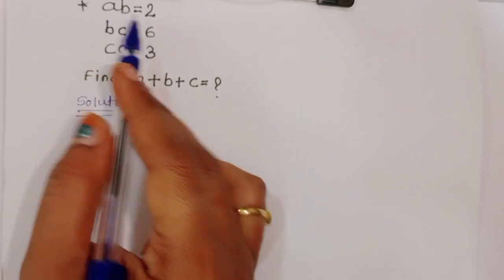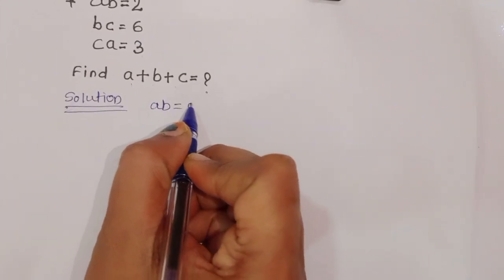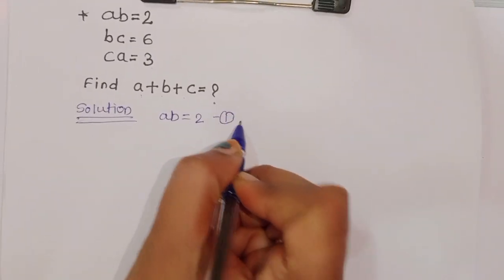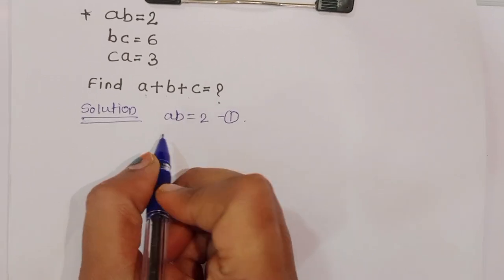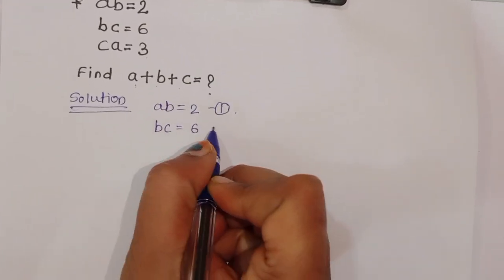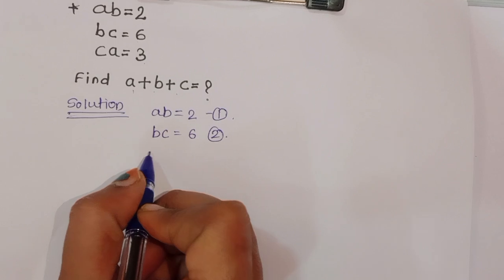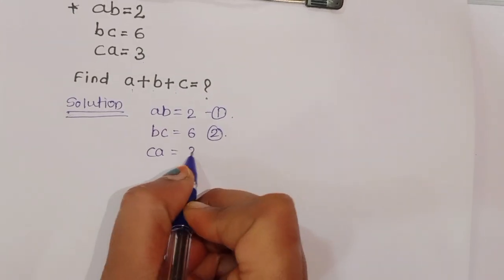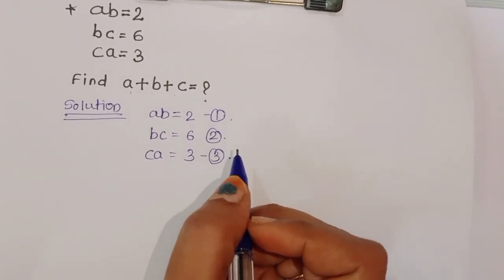First, what is given? AB is equal to 2 — this is equation 1. BC is equal to 6 — equation 2. CA is equal to 3 — this is equation 3.